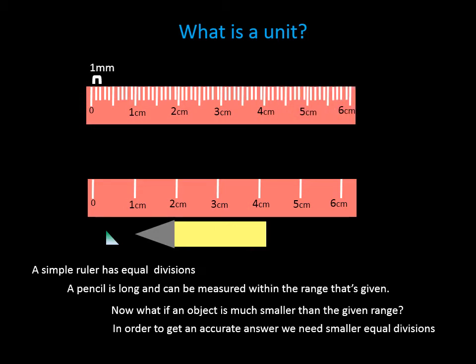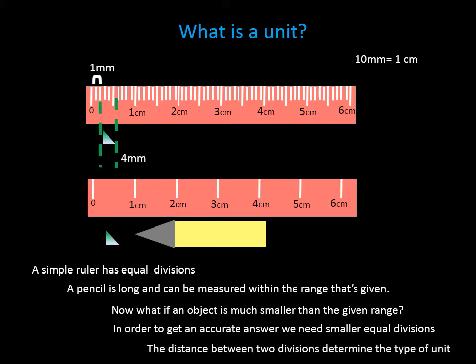Now see, this is 1 mm. 10 mm makes 1 cm. Now if I place the same glass piece with this scale containing a smaller unit, I can get a more accurate answer for the glass piece. As you can see, the glass piece appears to be almost 4 mm wide. With this, we can conclude that the distance between the two divisions determines the type of the unit.